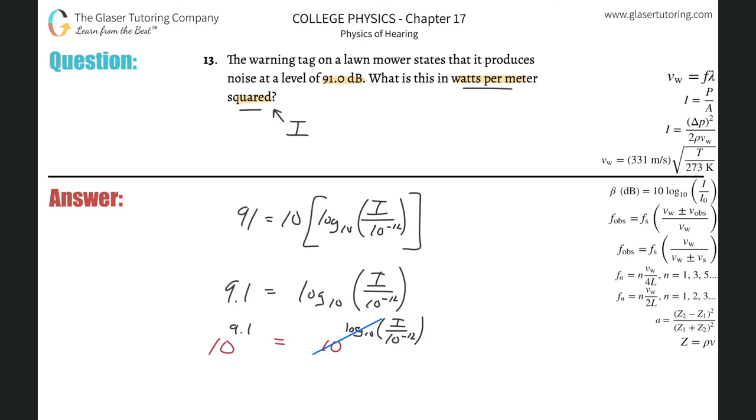Now what happens? The beauty of this is that the 10 cancels the log base 10. Then the exponent floating up there basically comes back down as a normal value. So this is 10 raised to the 9.1 will equal the intensity divided by 10 raised to the minus 12.